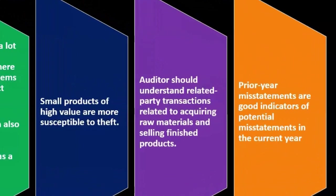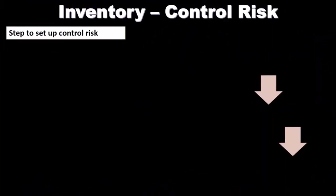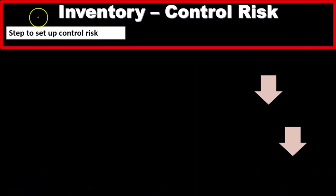Prior year misstatements are good indicators of potential misstatements in the current year. The standard audit practice of looking at what happened last year to inform the current year applies to inventory — if there was a problem last year, we're more skeptical this year as well, which increases the inherent risk factors.